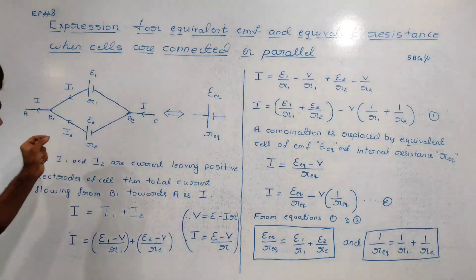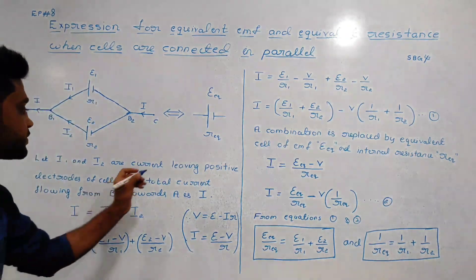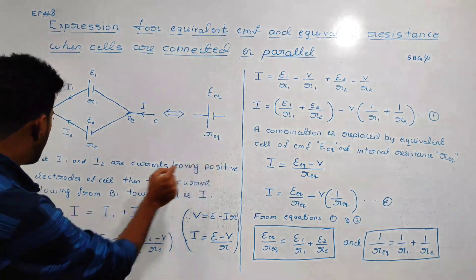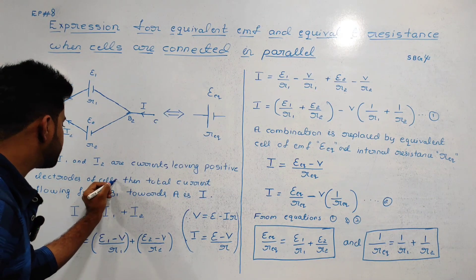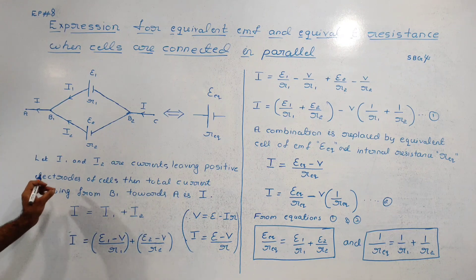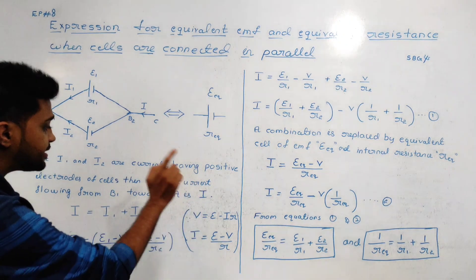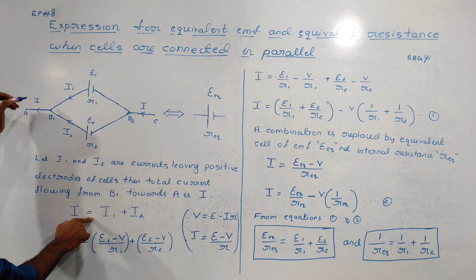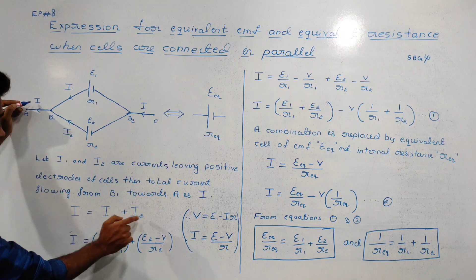Let I1 and I2 be the currents leaving the positive electrodes of the cells. Then the total current flowing from B_eq towards A is I, the total current. So, I is equal to I1 plus I2.